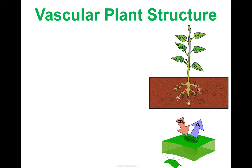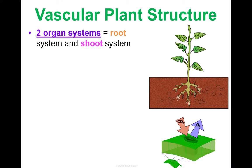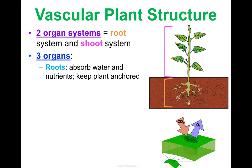Vascular plants have two organ systems: the root system, which is essentially everything underground, and the shoot system, which is everything above ground. Organ systems are made of organs, and there are three critical organs in vascular plants. Roots absorb water and nutrients and help keep the plant anchored. Roots can have root hairs to increase surface area and absorption ability. They can be tap roots — one long thick root — or a fibrous root system that spreads throughout. So roots have variation within them as well.